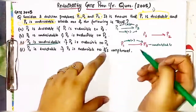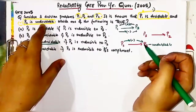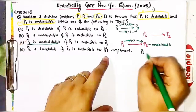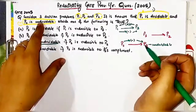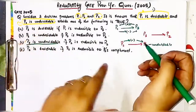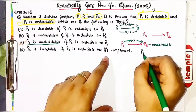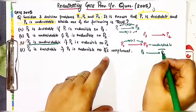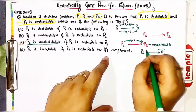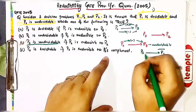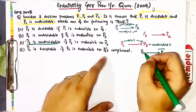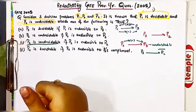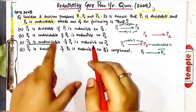Now check option D: it is given that P3 is reducible to the complement of P2. P2 is undecidable, and the complement of an undecidable problem is also undecidable. So P3 is reducible to P2's complement, which is undecidable. This passes positivity towards P3, so we cannot say anything about P3 — whether it will be decidable or undecidable.